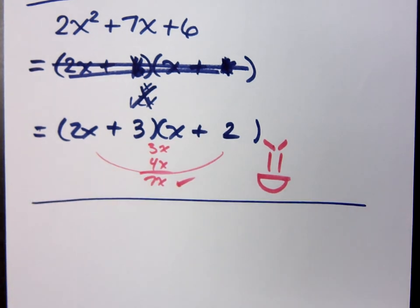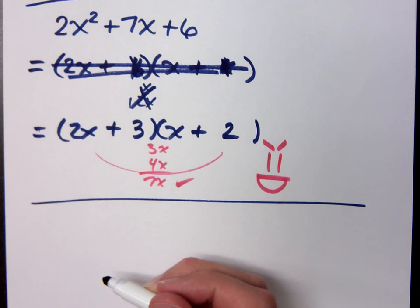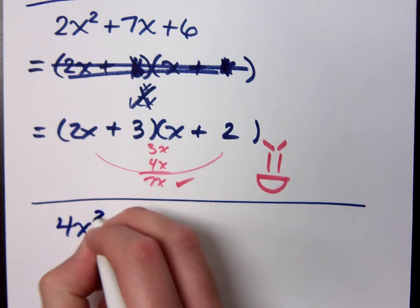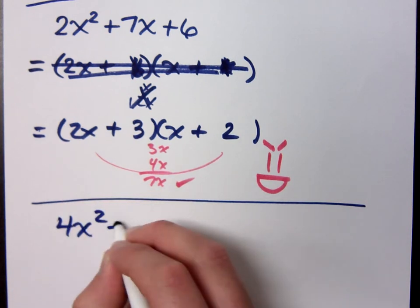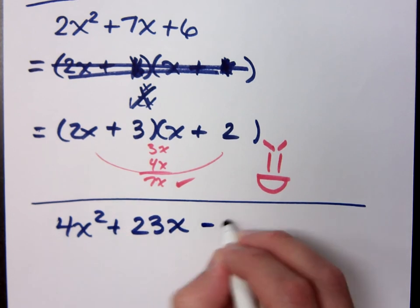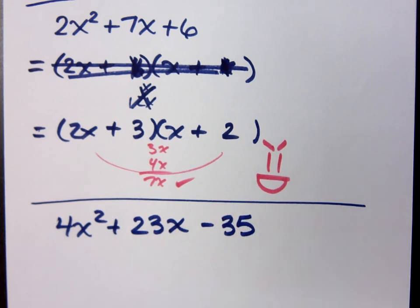Alright, let's try another one. There's so many problems to choose from. There's something I want to show you about this one: 4x squared plus 23x minus 35.